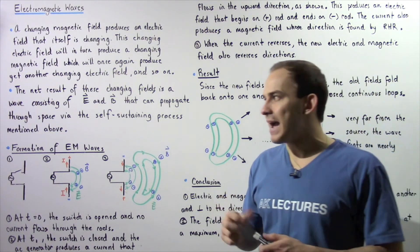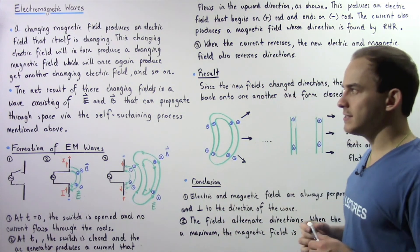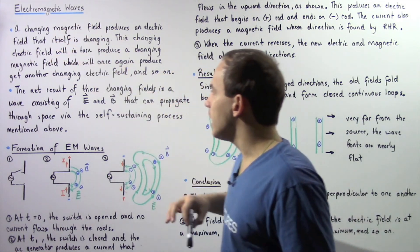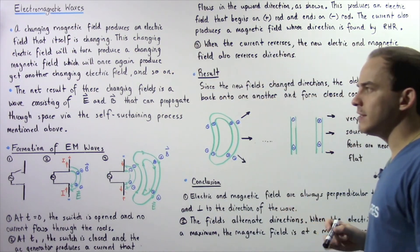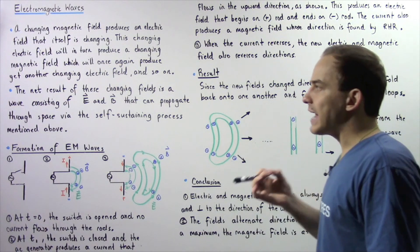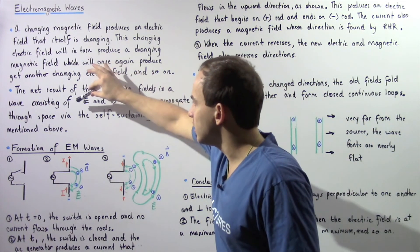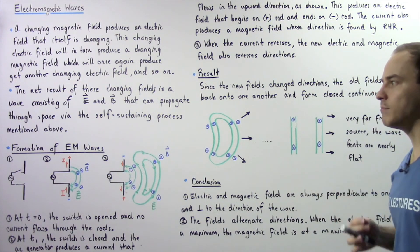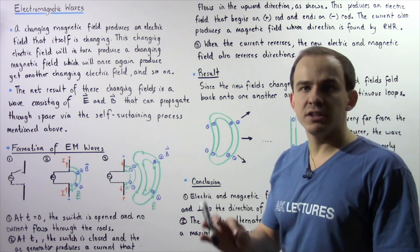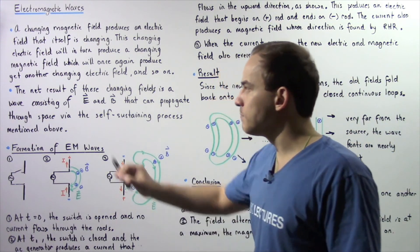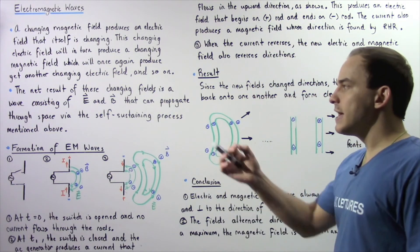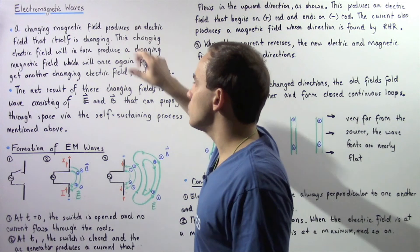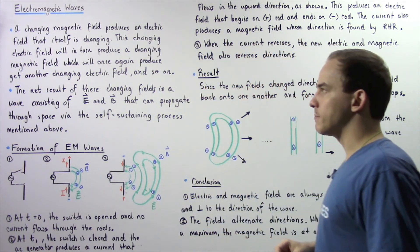James Clerk Maxwell, a Scottish physicist, was able to show that the net result of these changing fields is a wave that consists of a changing electric field and changing magnetic field. This wave can propagate without the presence of a medium through empty space via the self-sustaining process discussed previously.